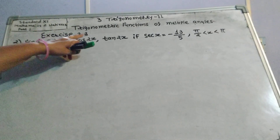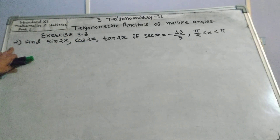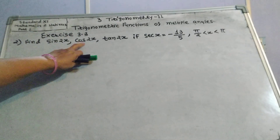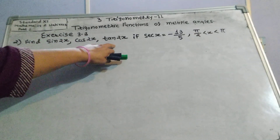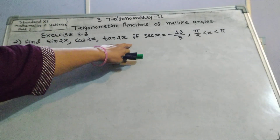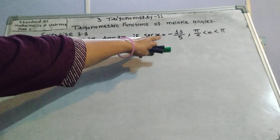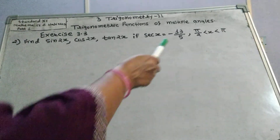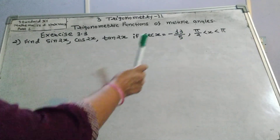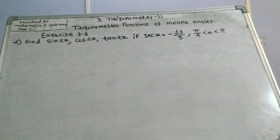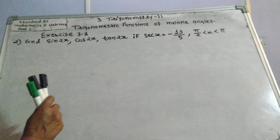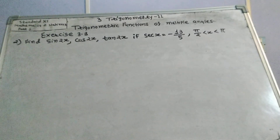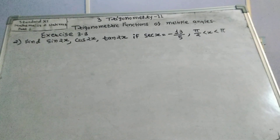Exercise 3.3, Question 2. Find sin 2x, cos 2x, tan 2x if sec x equals negative 13 upon 5 and angle x lies in between pi by 2 and pi. Angle x is greater than pi by 2 and less than pi, meaning the angle lies in the second quadrant.